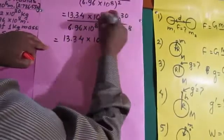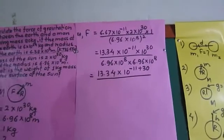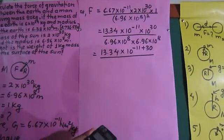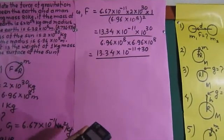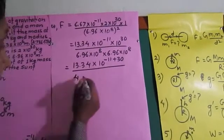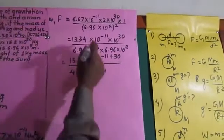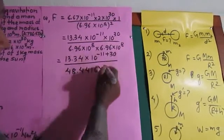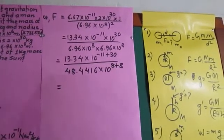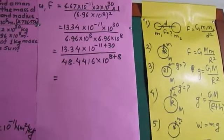We have the same base, so powers can be added or subtracted. In the denominator, 6.96 × 10⁸ whole squared — we can write the same twice: 6.96 × 10⁸ multiplied by 6.96 × 10⁸. Now 6.96 × 6.96 = 48.4416, and 10⁸ × 10⁸ = 10¹⁶. So the denominator is 48.4416 × 10¹⁶. We are dividing 13.34 by 48.4416.